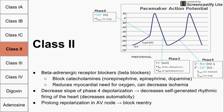One last effect of class 2 antiarrhythmic drugs is that they prolong repolarization in the AV node, which can block some reentry pathways going around the AV node and potentially fix AVNRT arrhythmia.